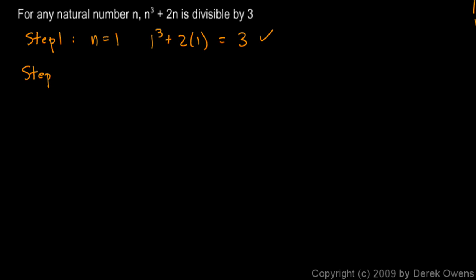Now on to step 2. We need to show that if it works for some number k, then it also works for k plus 1. So we assume that it works for k. So we're going to assume that k cubed plus 2k is divisible by 3.